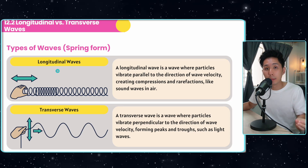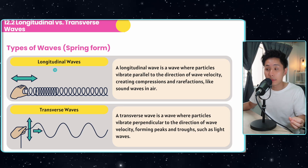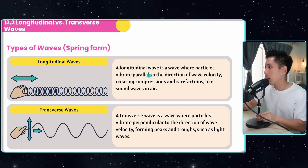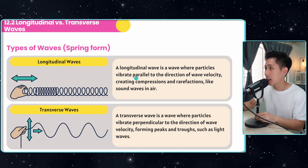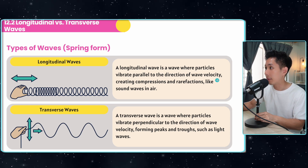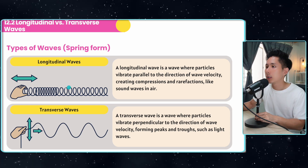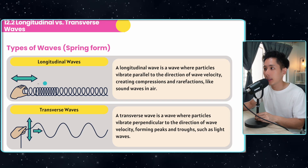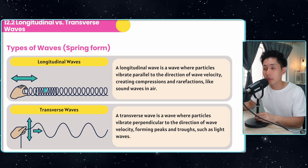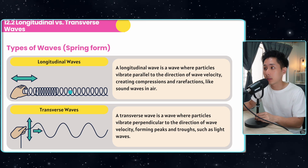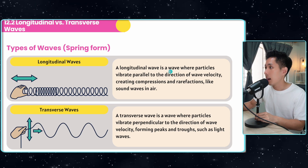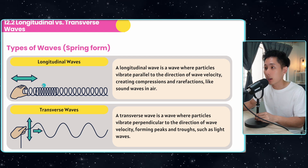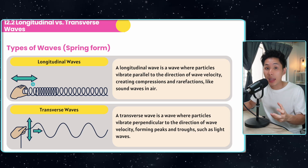Now let's look at the different types of waves: longitudinal waves and transverse waves. A longitudinal wave is a wave where particles vibrate parallel to the direction of wave velocity. You can see from this spring: the hand moves from left to right, and the movement of the spring is also from left to right. That's why a longitudinal wave has particles vibrating parallel to whatever direction the hand is moving.